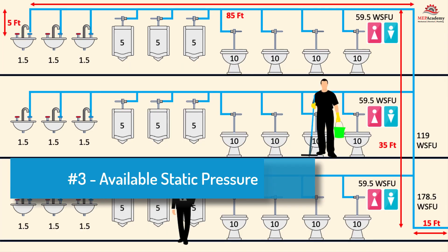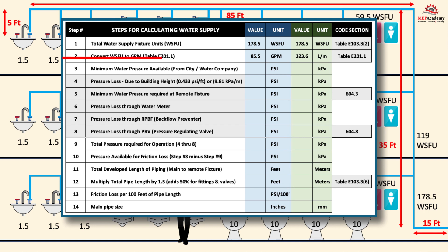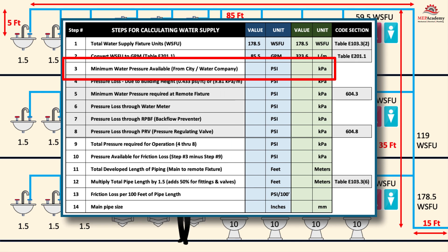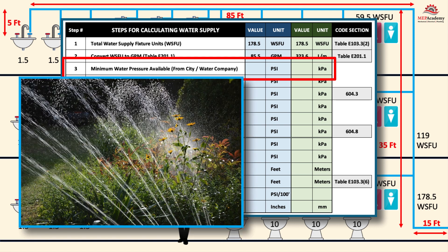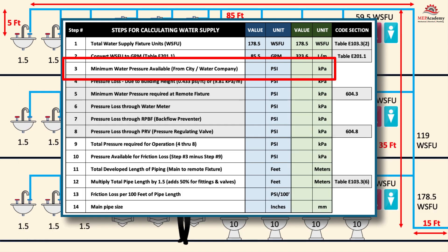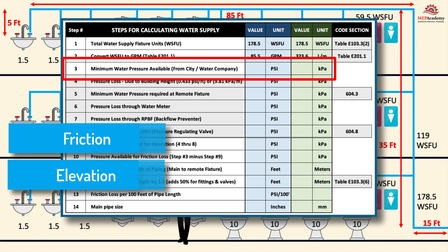Step 3: Obtain Minimum Daily Static Pressure. The available static pressure in PSI or kPa at the water meter or source is provided by the city or local water authority. The minimum pressure is used in the calculation to ensure that during peak water usage — usually summer, when landscaping systems are maximized and water-based cooling systems are at peak — sufficient pressure is available to overcome all system losses due to friction and elevation so that plumbing fixtures operate properly.